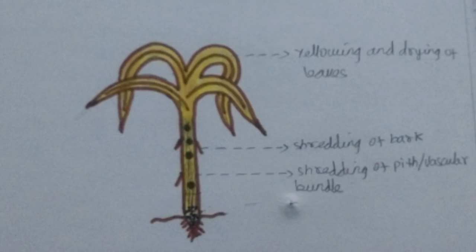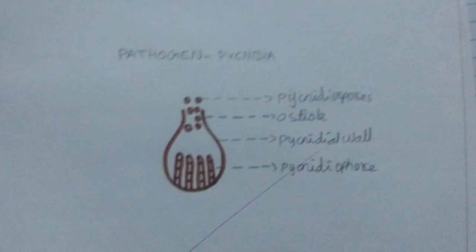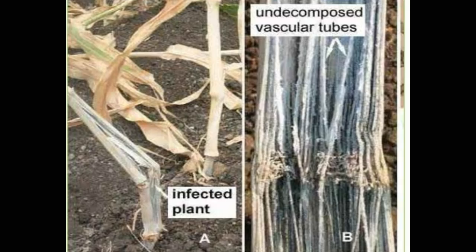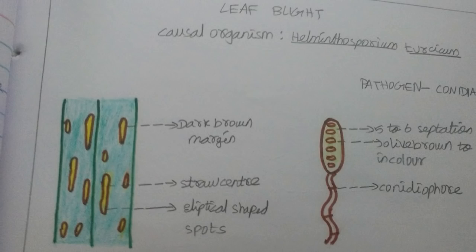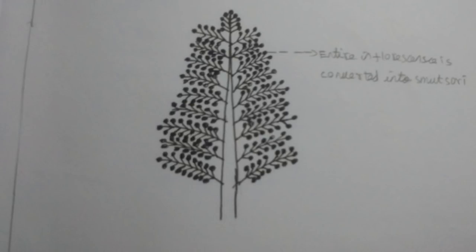In charcoal rot, if the weather is dry, the crop will suddenly dry. If the crop is dry, it will continue to dry — this is the nature of charcoal rot disease. Next is rust. In rust disease, if the crop is affected, it will show rust symptoms.